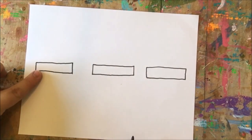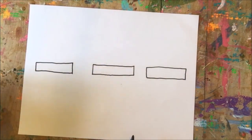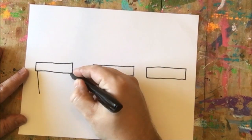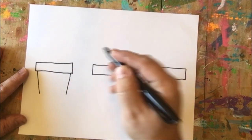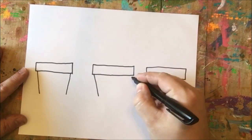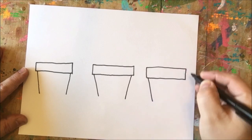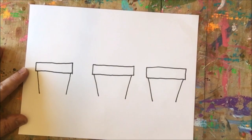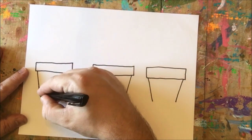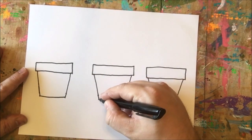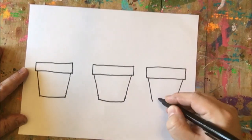These are gonna be planter pots, and so underneath each rectangle I'm gonna draw two diagonal lines that are going inward, just like the planters you might see at your house or at the store. To finish off our planters, I'm gonna go ahead and draw a line connecting those two diagonal lines. This is gonna be the bottom of our planter.